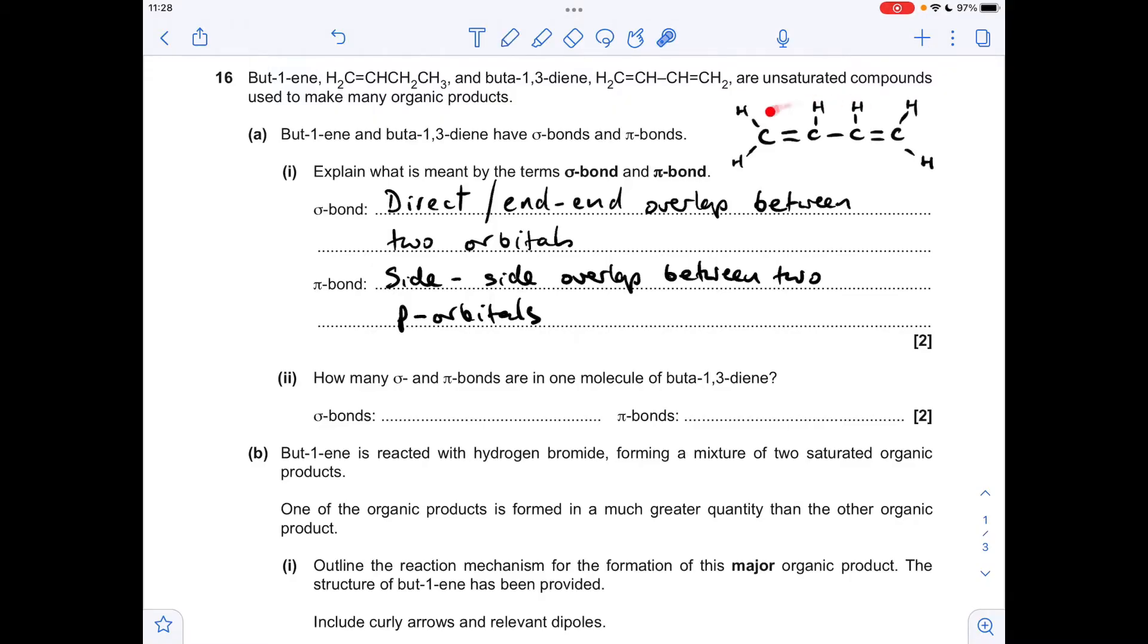Moving on to the next part, I've drawn up the displayed formula for the buta-1,3-diene molecule. All the single bonds are sigma bonds, so we've got 1, 2, 3, 4, 5, 6, 7, but we've also got a sigma bond in each of the double bonds, so there's nine sigma bonds altogether. And as well as the sigma bond in the double bond, we've also got a pi bond, so we've got two of those.